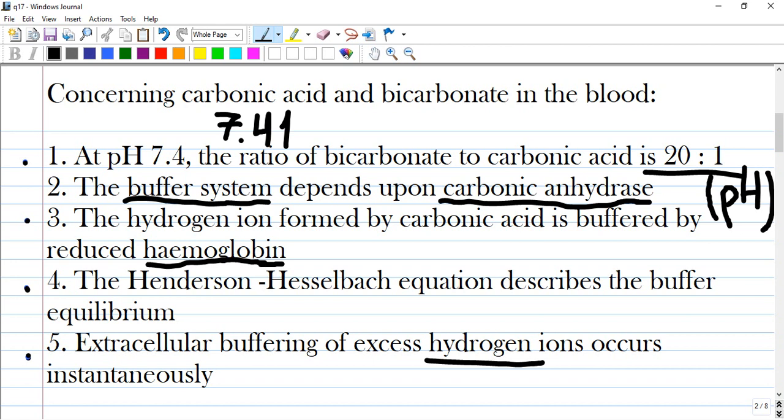So option A: at pH 7.4 the ratio of bicarbonate to carbonic acid is 20 to 1. So normal level or normal pH of blood is 7.41. This one is correct just get a memory of this.